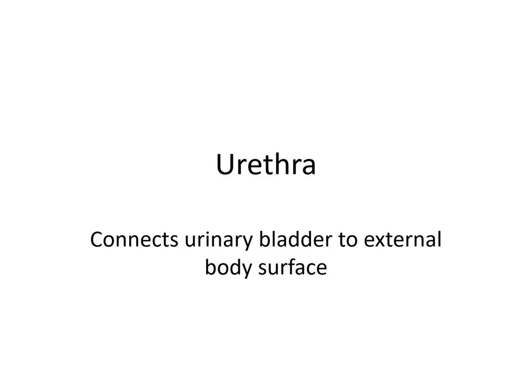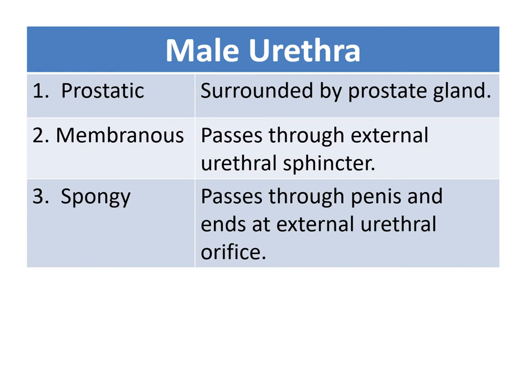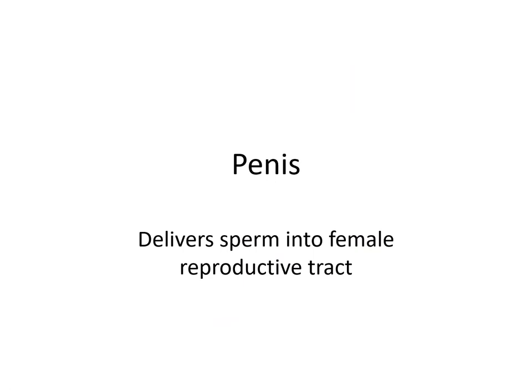The urethra connects the urinary bladder to the external body surface. In the male, it moves both urine and semen, and it's much longer in the male — about 18 to 20 centimeters. The smooth muscle contracts during ejaculation, and it also contains mucus-secreting glands that contribute to the semen. It is composed of three parts: the prostatic urethra surrounded by the prostate gland, the membranous urethra that passes through the external urethral sphincter, and the spongy urethra that passes through the penis and ends at the external urethral orifice.